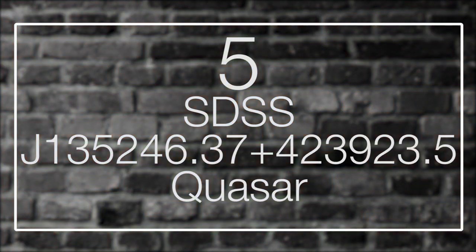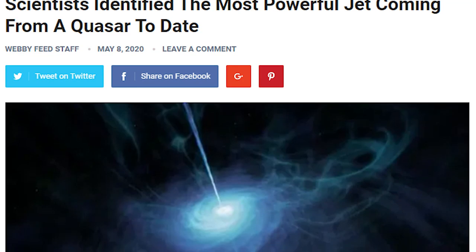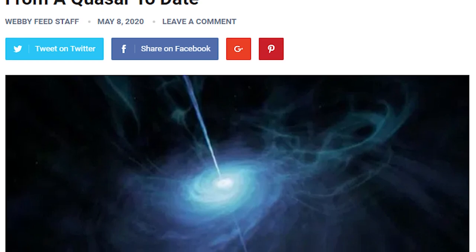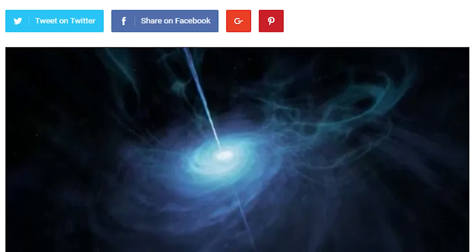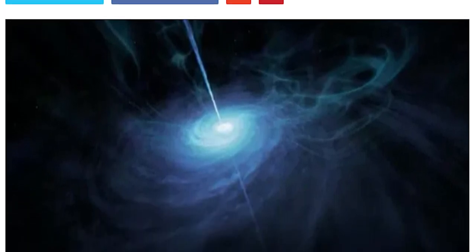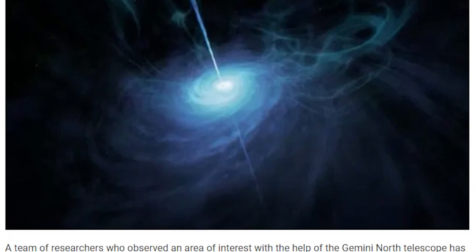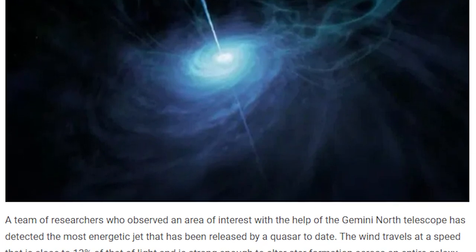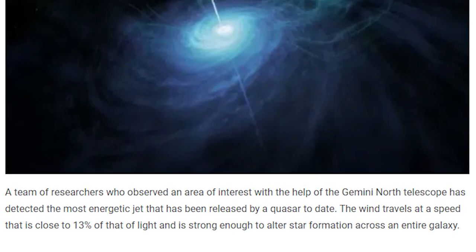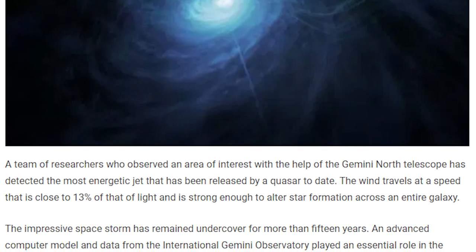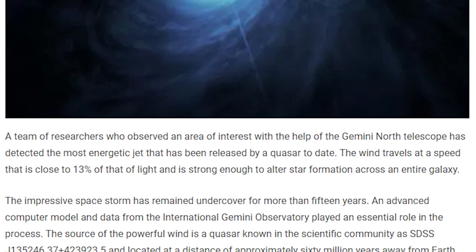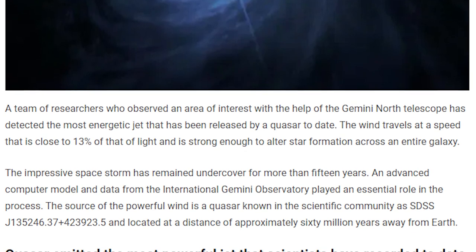Number 5: SDSS J135246.37-423923.5 Quasar. With relativistic jets traveling at a record-splitting 13% of the speed of light, this quasar, its name I'm not going to repeat, is the most powerful quasar ever detected. Let's just call it SD for short. At the center of this unfortunate galaxy is an extremely active supermassive black hole with a mass 2,000 times greater than the one that sits at the center of our Milky Way.